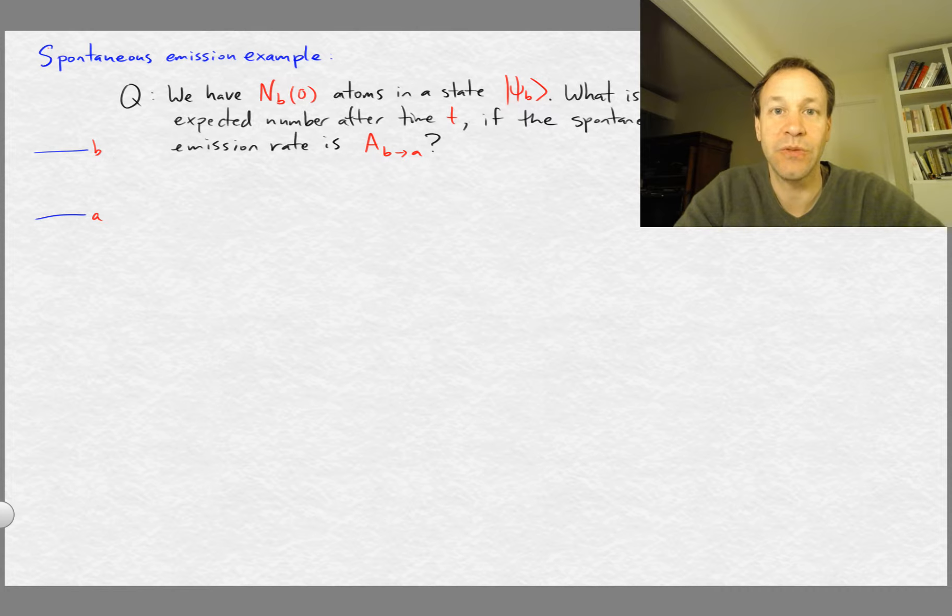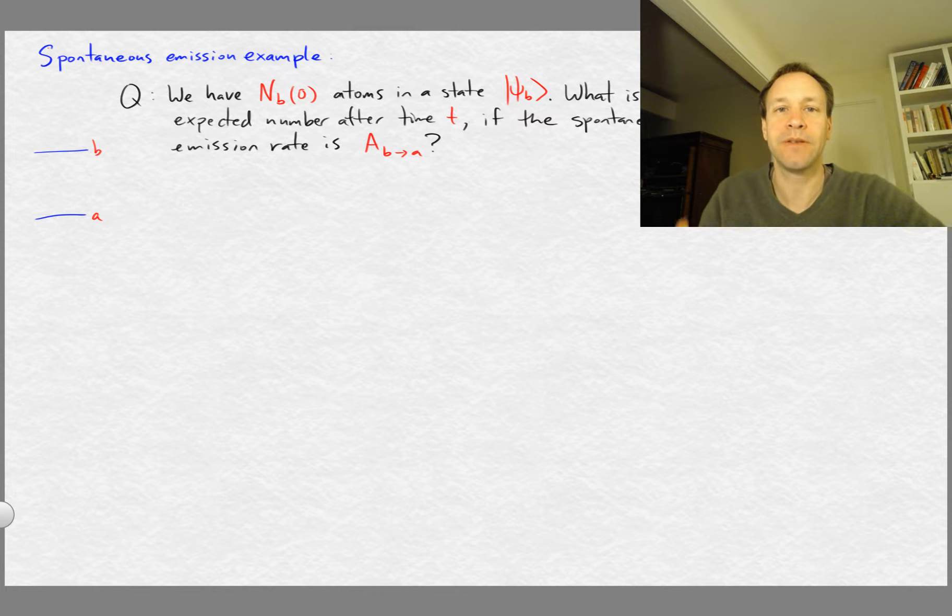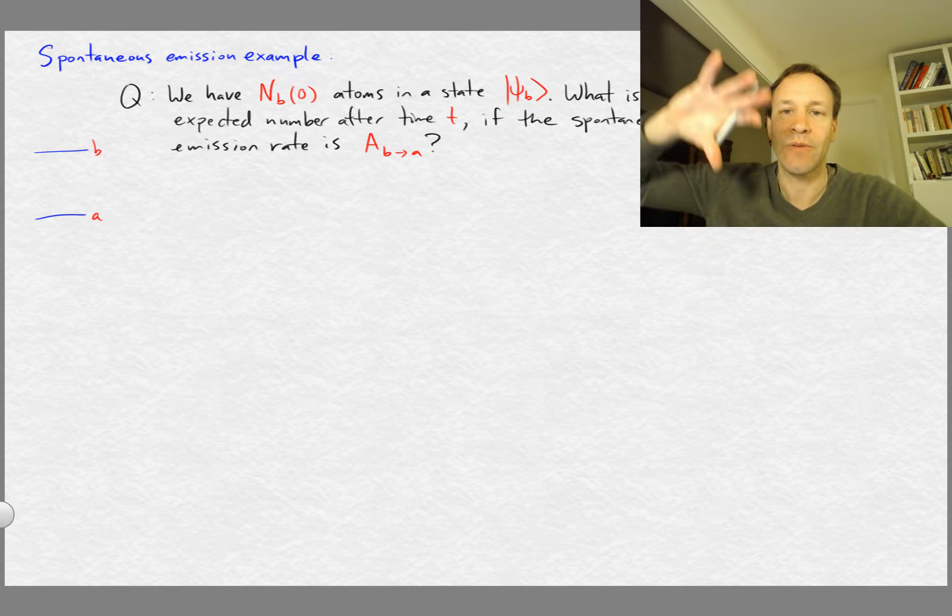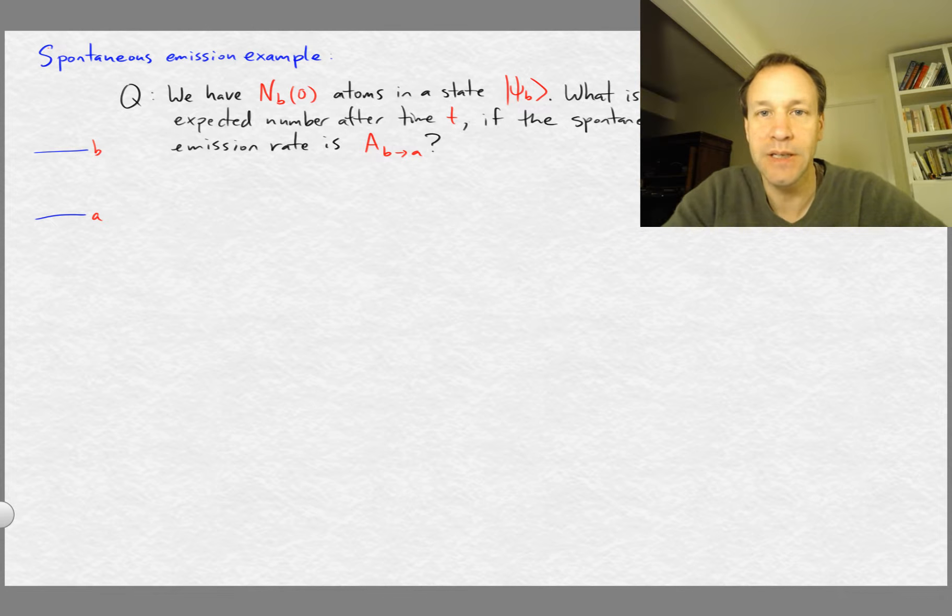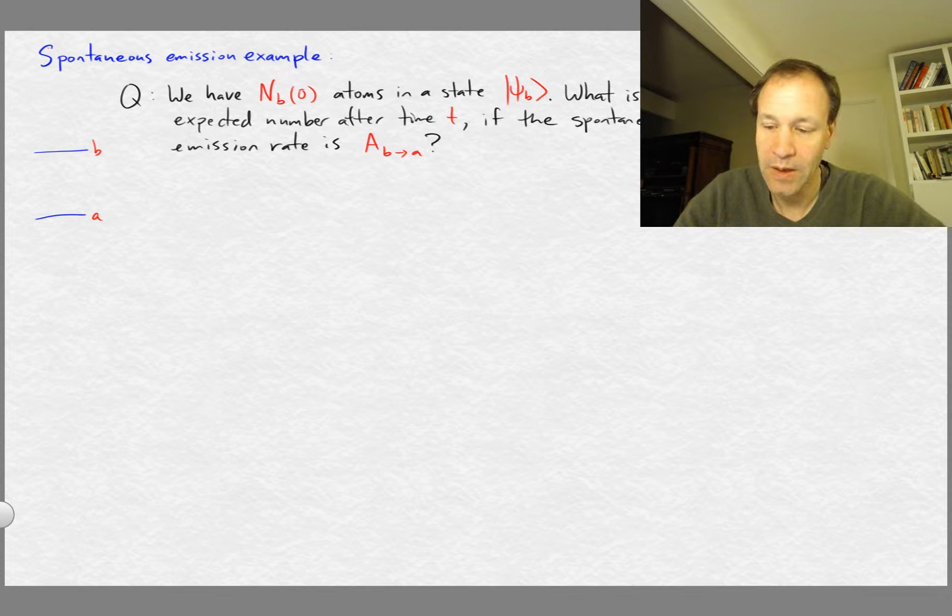how many atoms do we expect are still going to be left in the b state. And I'm assuming that there's no background electromagnetic radiation so that we don't end up having transitions back up from the a state to the b state, and we don't have any stimulated emission going from the b state down to the a state.